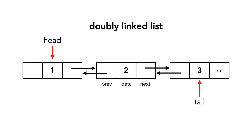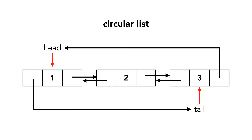The doubly linked list is a more useful version of a list. Each object contains a previous pointer that points to the object in front of it in the chain. There's also such a thing as a circular list. In this case, the previous pointer of the head object points to the tail, and the next pointer of the tail object points to the head.